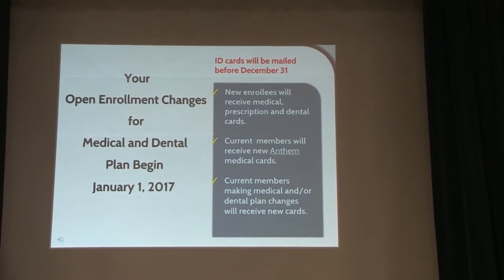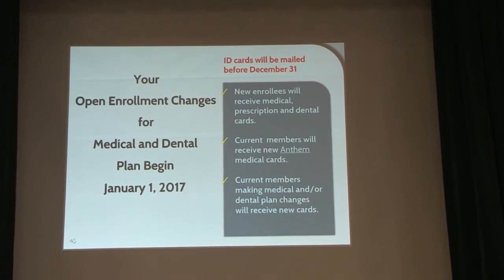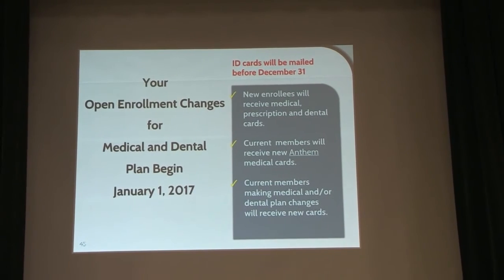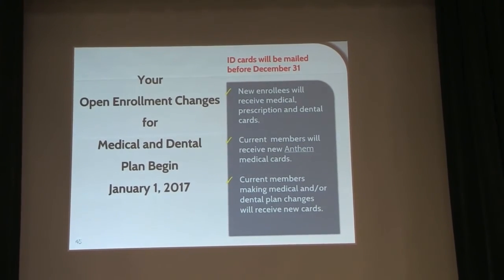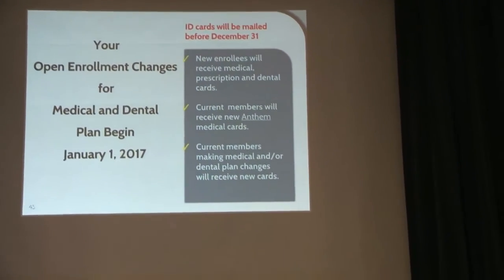If for some reason you don't get those cards before December 31st, probably the biggest issue for people is prescriptions. When you go into the pharmacist, the easiest way to make sure you're getting your prescriptions is just to give them your social security number — typically they can look up your information and get your prescriptions filled. You can also download a temporary ID card on the Anthem website.